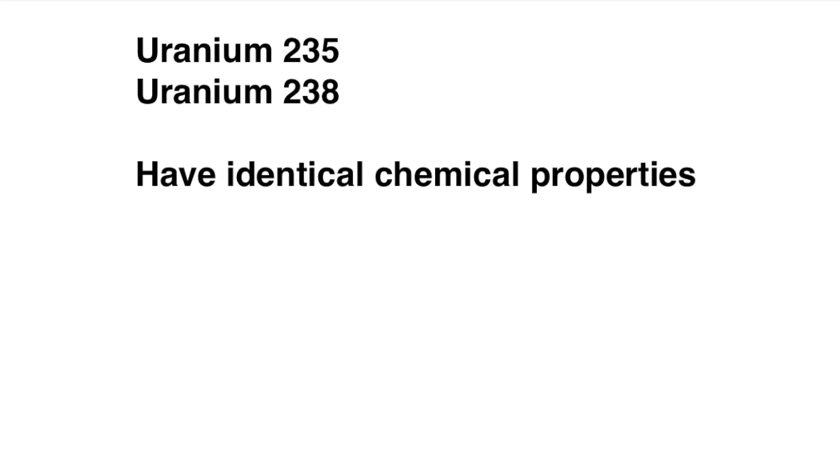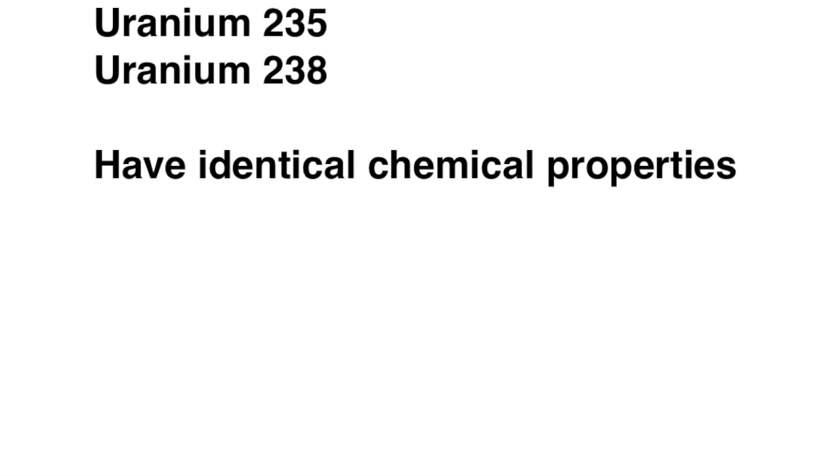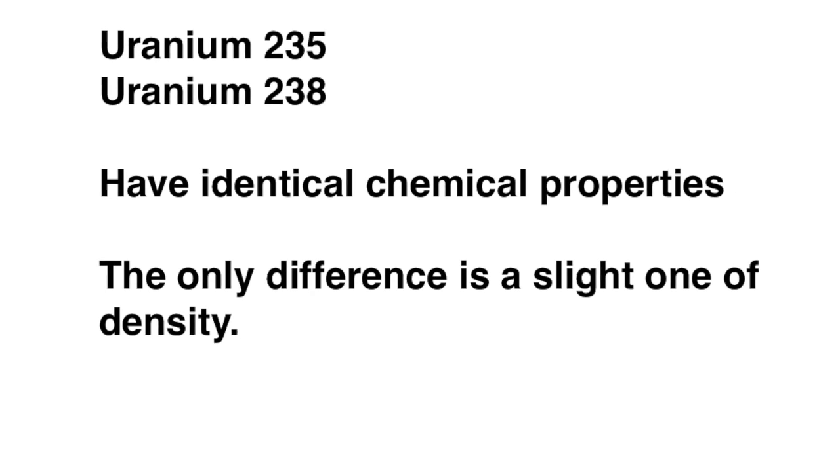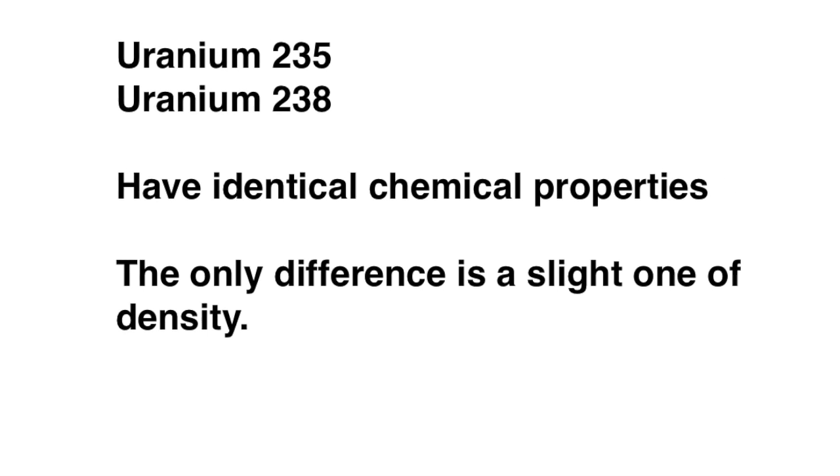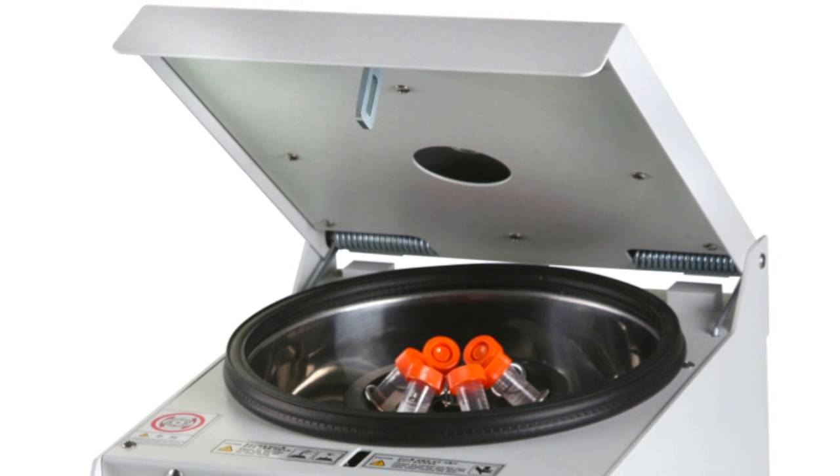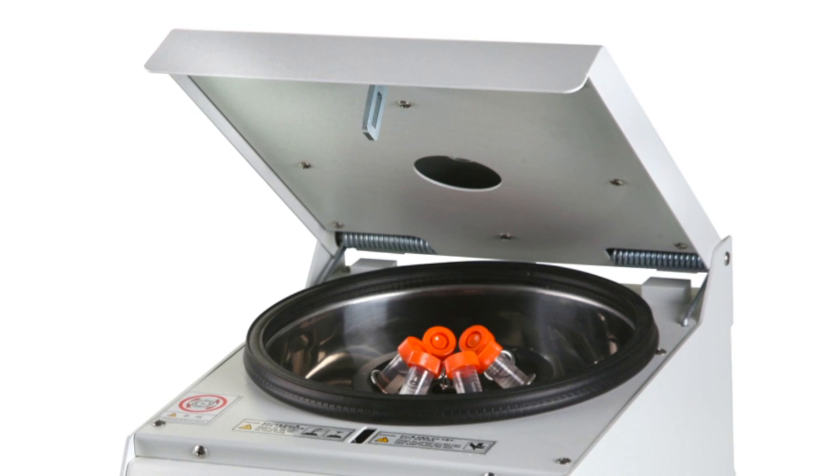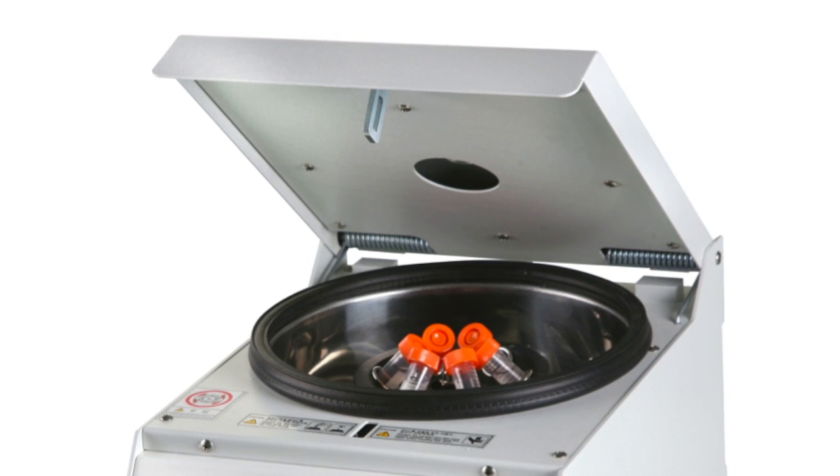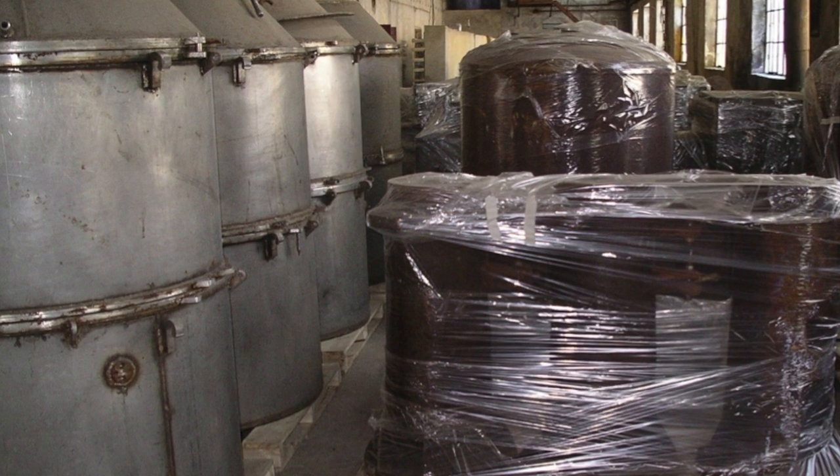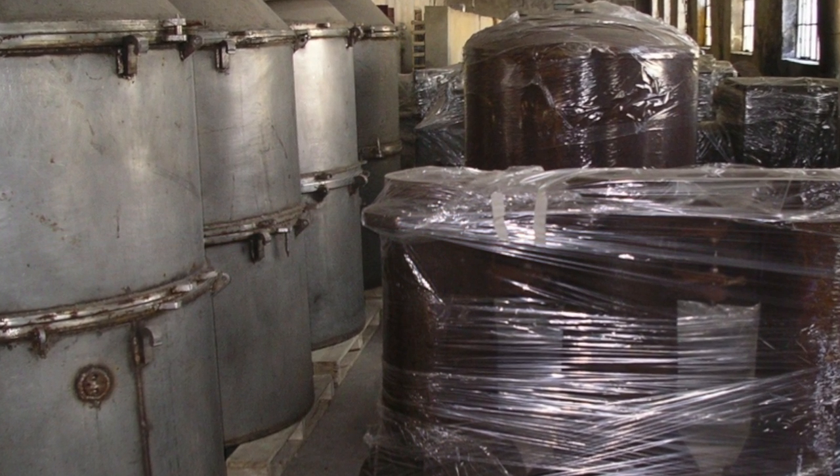Like all isotopes of the same element, they have absolutely identical chemical properties. The only real difference between them that can be exploited is a very slight one of a different density. In very rough outline, the uranium-235 and 238 are separated with a centrifuge, not quite like this simple one, but rather in huge specially designed centrifuges, which separate the uranium out when it's in combination with fluorine, uranium hexafluoride, which is a gas.